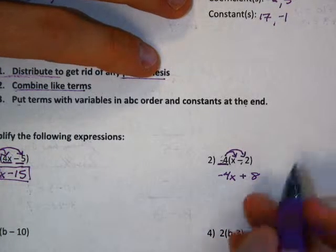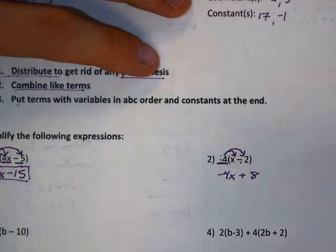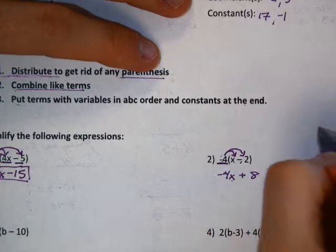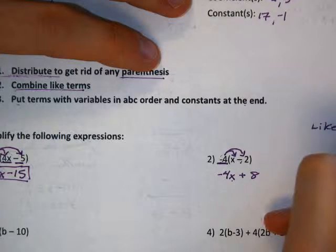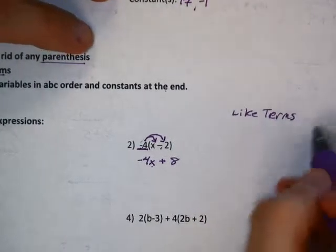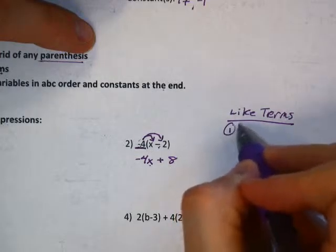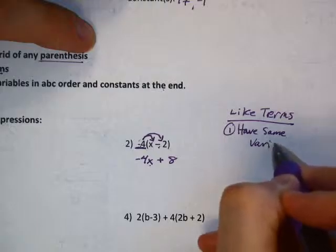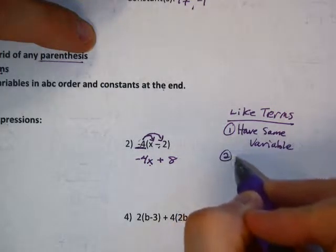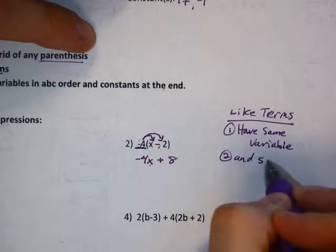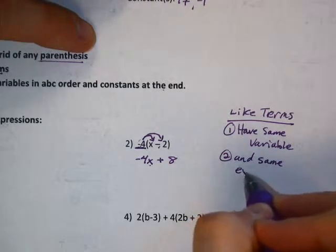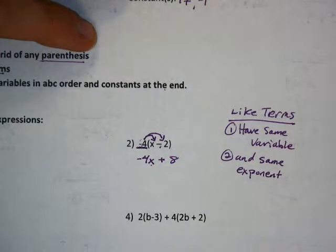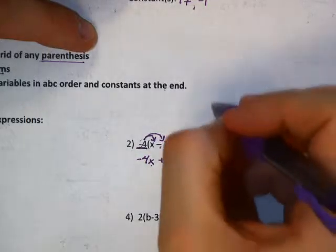Number 2. Same deal. We're going to take negative 4 and distribute it. So we're going to multiply it times x and times negative 2. So negative 4 times x is negative 4x. Or in other words negative 4 times x. That is the same way to write that. But we're not done. We've got to do negative 4 times negative 2. So negative times a negative is positive and 4 times 2 is 8. So combining like terms. Now like terms, those are going to be any of your terms, remember pieces you're adding together, that have the same variable. So I'm going to write like terms here and this is going to be our definition.